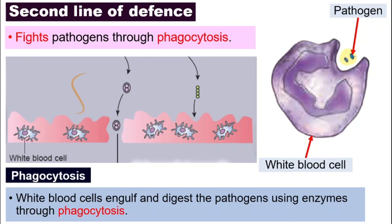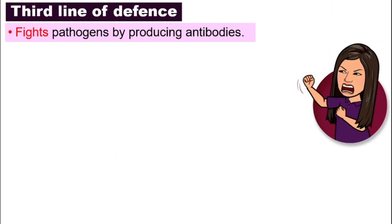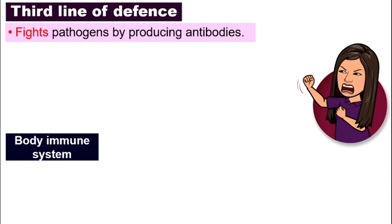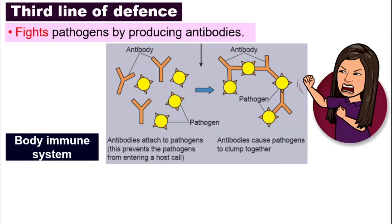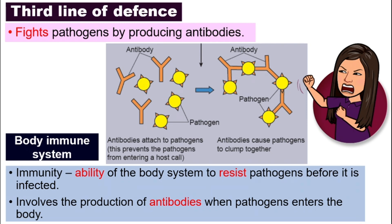What if these pathogens are really strong and get through this second line? Don't worry — we still have the third line of defense. The third line also fights pathogens, but they do so by producing antibodies. And this is actually our body's immune system. You have heard many times that we need to build a strong immune system — because it helps us not to fall sick. Here is an illustration: this is the antibody, and the one that looks like a star represents the pathogens. What antibodies do is attach themselves to the pathogens so that they form a clump, and these pathogens cannot attack us. Immunity is our body's ability to resist pathogens before our body gets infected, and it involves the production of antibodies.